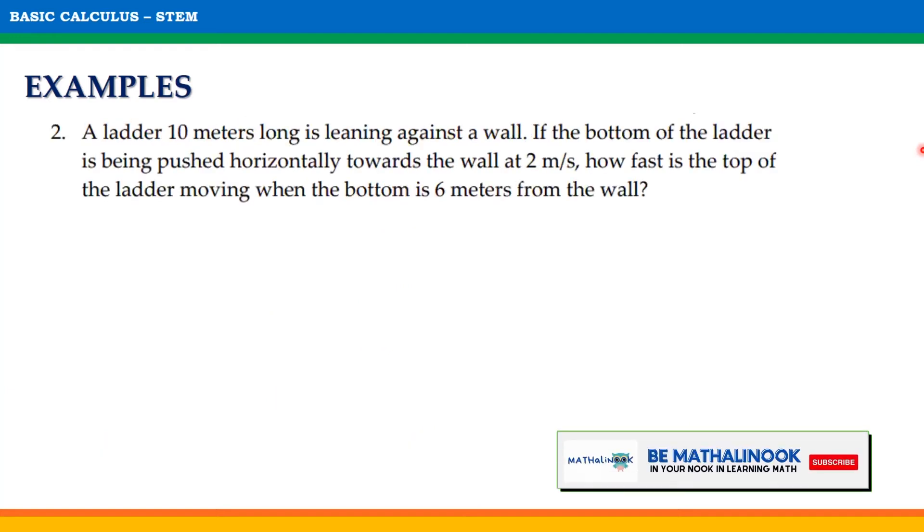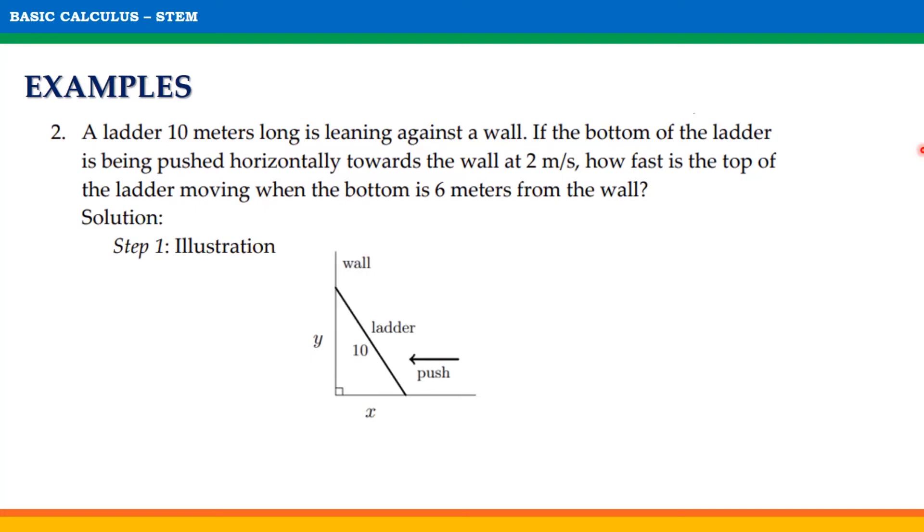Another example: a ladder 10 meters long is leaning against a wall. If the bottom of the ladder is being pushed horizontally towards the wall at 2 meters per second, how fast is the top of the ladder moving when the bottom is 6 meters from the wall? For step 1, we have this illustration. Notice that the ladder is 10 meters long. What we need to find is the rate of change of the top of the ladder when the bottom is 6 meters from the wall.